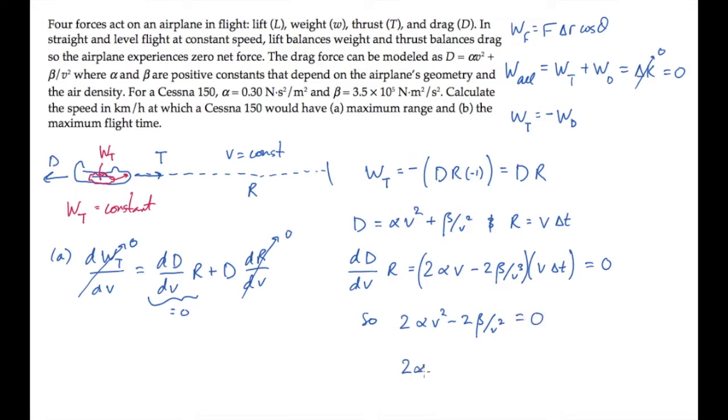So we do the algebra. Solving to find that the required speed V, I'm calling it V sub mR, mR for maximum range, equals the constants beta over alpha to the one-quarter power. Substitute all the values and calculate.